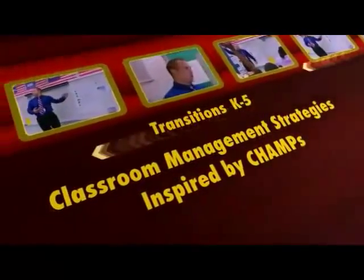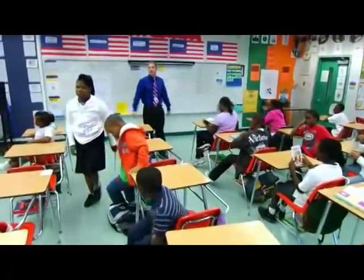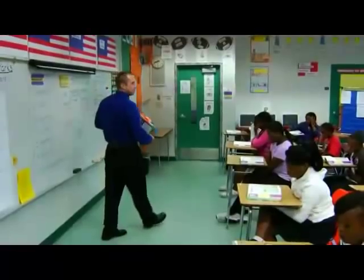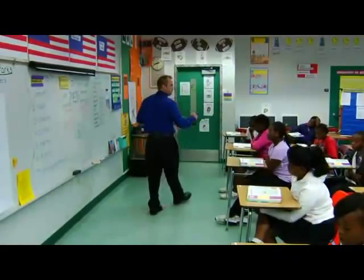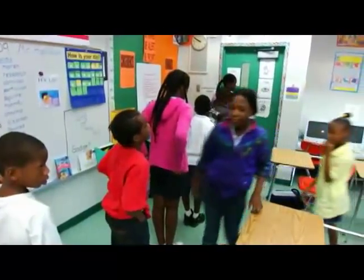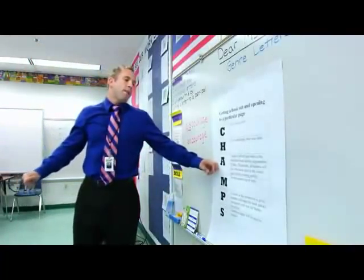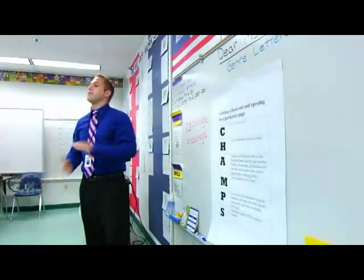Transitions. Grades K through 5. Transitions are those times when students move from one task to another or from one activity to another. For example, the class is transitioning from a teacher-directed reading lesson to working independently, or math is over and it's time to go to lunch. Transitions can be problematic because students often see them as a time to misbehave. But it doesn't have to be that way if you make your expectations for each transition clear with the help of CHAMPS.